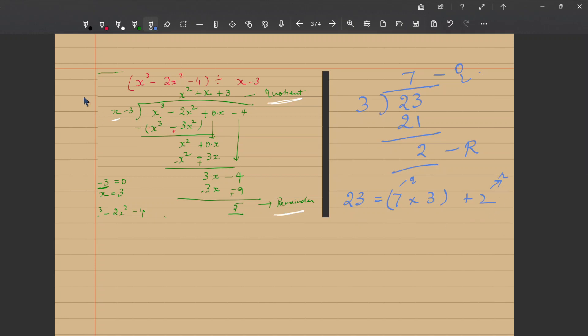The same can be applied to this polynomial division. In the place of 23, here you have x cube minus 2x squared minus 4. This can be expressed as a product of the quotient. Here it is 5. So this is the division fact for polynomial division.